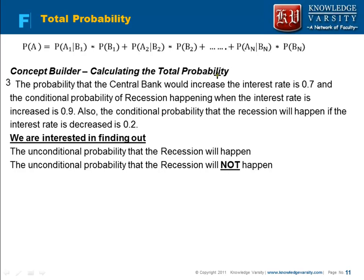Now let's see an example related to the total probability rule. We have seen earlier how the total probability can be computed. Note that total probability is also your unconditional probability. We saw in the Dhoni's example how we can compute. This is a very interesting question — question number three.